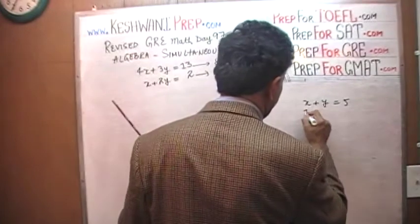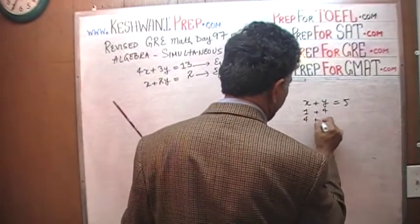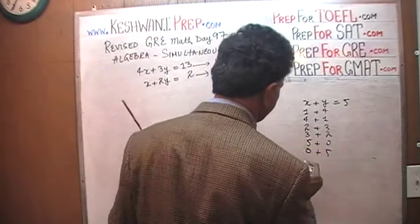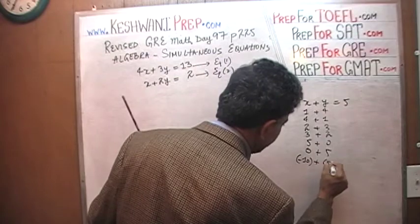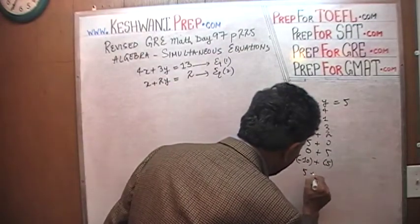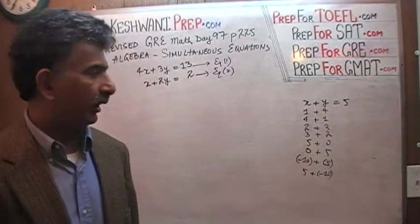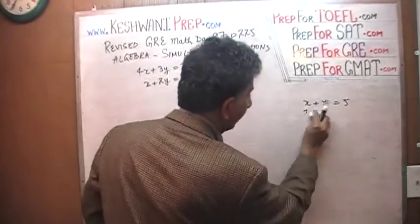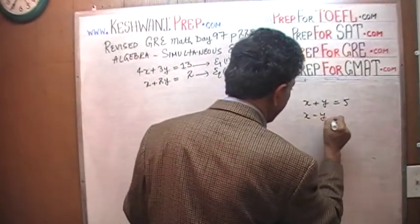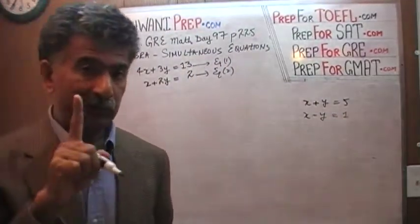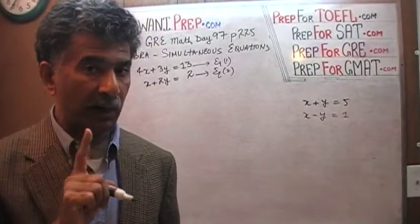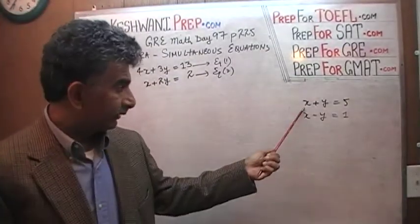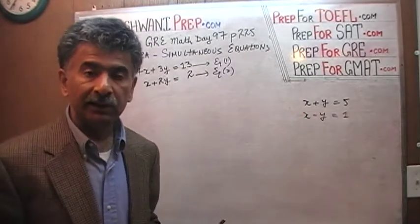For example, x can be 1 and y can be 4, or x can be 4 and y can be 1, x can be 2 and y can be 3, it could be 5 and 0, or 0 and 5. x could be negative 10 and y could be positive 15, or x could be positive 5 and y could be negative 10. There are infinite possible values. But if in addition to this equation we are given one more equation, and we are told that x minus y equals 1, now there is only one unique value of x and one unique value of y which will satisfy both equations simultaneously.